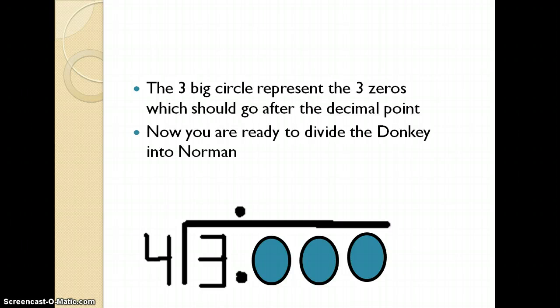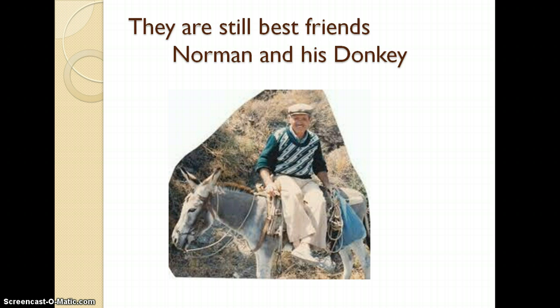The three big circles represent the three zeros which should go after the decimal point. Now you are ready to divide the donkey into Norman. The dividend into the divisor. You're dividing the divisor into the dividend. Yes.